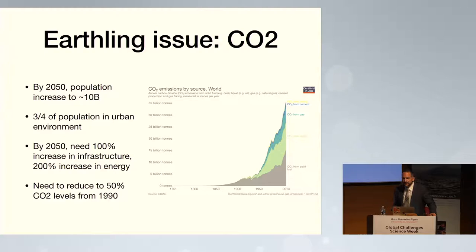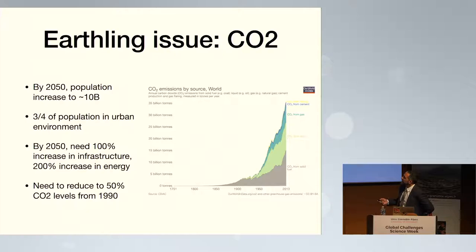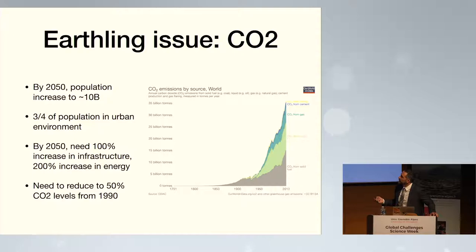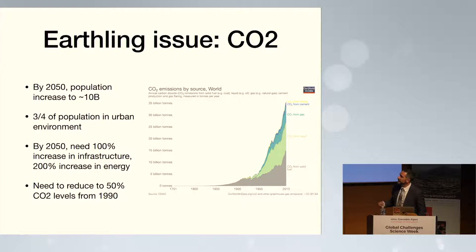The main thing I'm going to say today is that there are many things we can do here on Earth as we think about doing things outside our planet. Here's a graph you've probably seen: CO2 emissions on our planet from the beginning of the century until now — a huge ramp from the 1900s to today. Cement and steel production are among the largest producers of CO2. By 2050, world population will increase to about 10 billion, with about three-fourths living in urban environments.